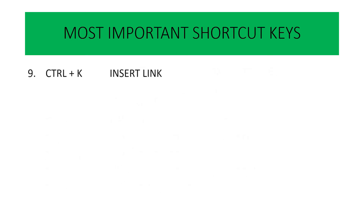Next is Ctrl K. Ctrl K की मदद से हम किसी भी text या word को hyperlink में convert कर सकते हैं. Ctrl K press करने के बाद उसका complete address लिखना पड़ता है जैसे www.google.com, तो उस word पर click करने पर directly Google की website पर जाएंगे. इस तरह किसी भी word, statement, या picture को link देने के लिए Ctrl K का use करते हैं.